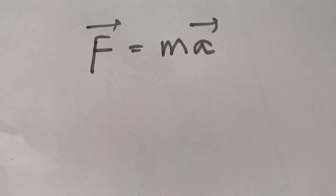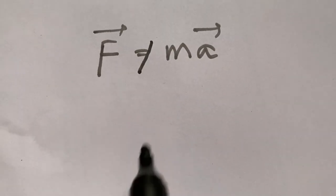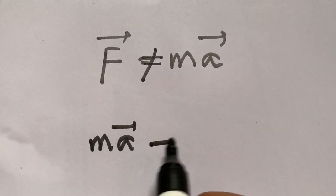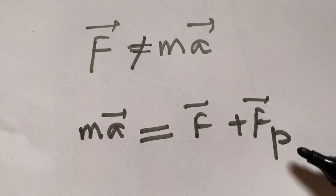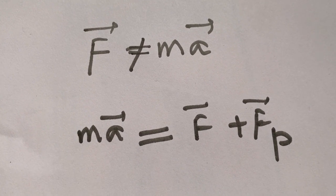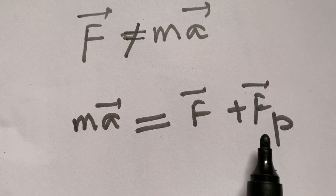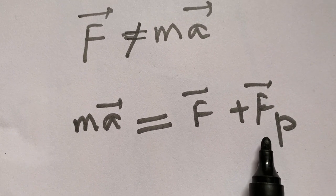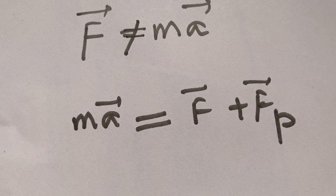In an inertial frame, force equals mass times acceleration is valid in its form. But in a non-inertial frame, this is not valid. In order to make this relation valid, we add another force which is the pseudo force. So pseudo force comes just to make the force-equals-mass-times-acceleration relation valid so that we can apply the mathematical techniques we know. This is not a physical force — we are adding it on paper so that our life becomes simple and we can do easy mathematics.